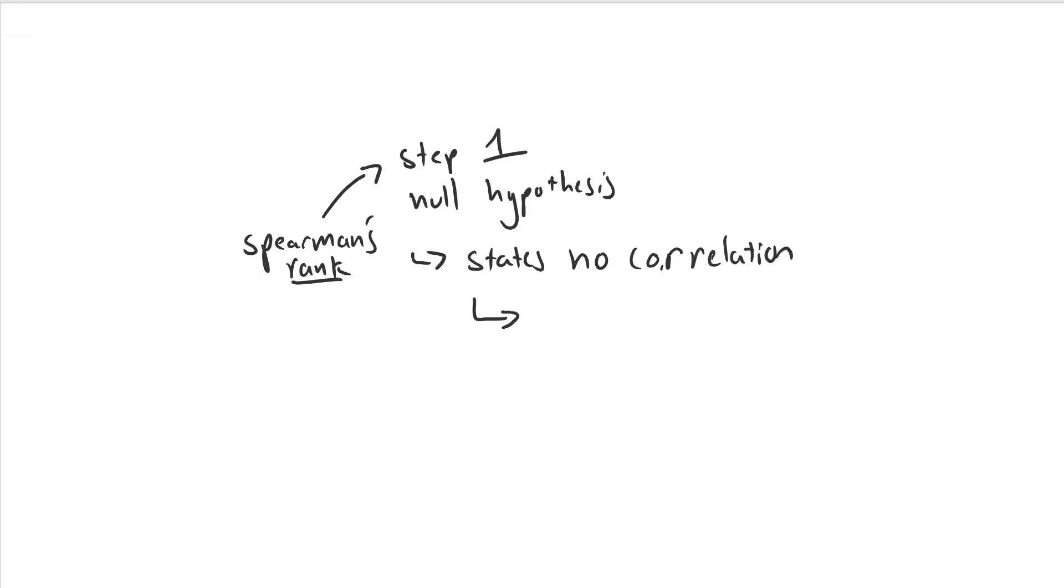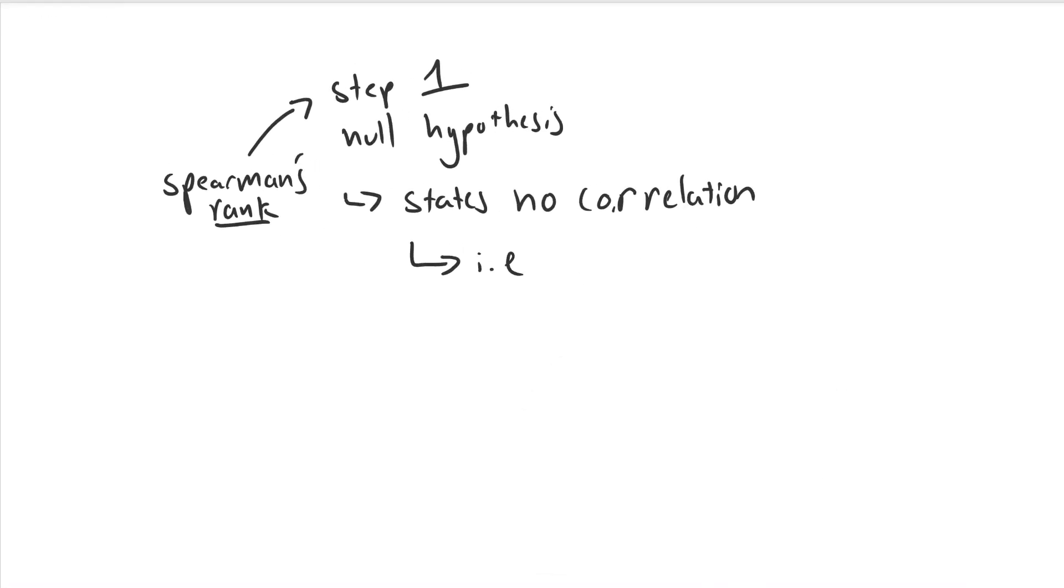Let's take an example. There is no correlation between the percentage cover of marram grass on the sand dunes and wind speed. So that's what our example is going to be. Two different variables or two different data sets that we're trying to compare to see if there's some kind of correlation.